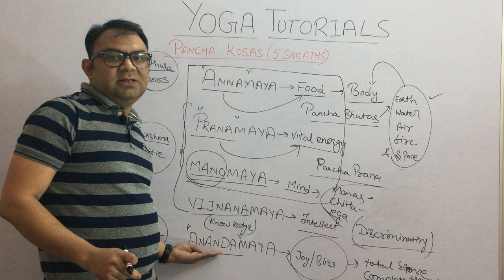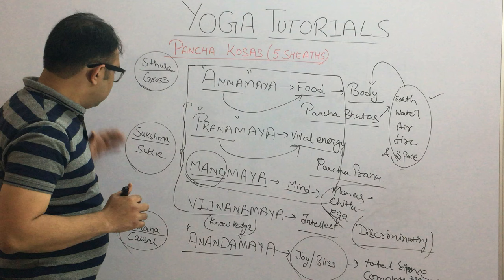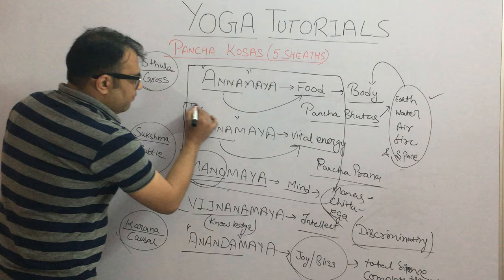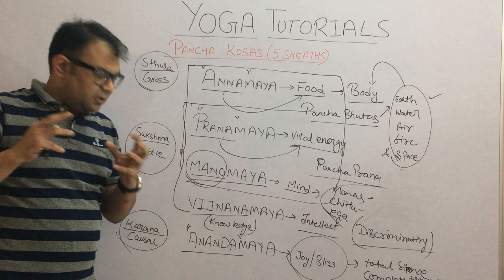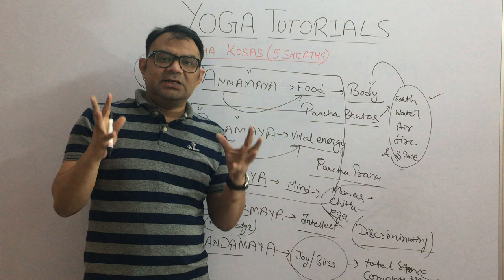So to summarize: the Sthul Sareer, the gross body, corresponds to the Annamaya Kosha. The Sukshma Sareer, the subtle body, consists of the Pranamaya, Manomaya, and Vijnanamaya Koshas. And the Karana Sareer, the causal body, is the Anandamaya Kosha — the cause of the creation of the whole universe — which you can also understand as the full joy of the Supreme Being. If our mental state is at the Anandamaya Kosha level, we are in a totally peaceful state of mind. Hope you have understood this concept. Thank you very much.